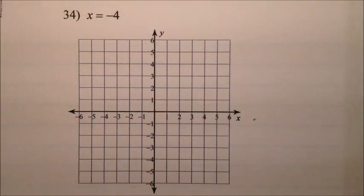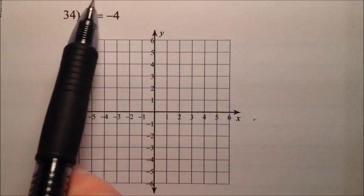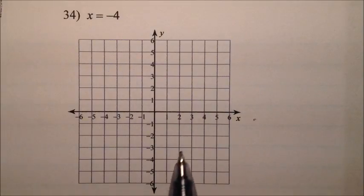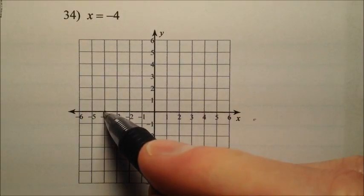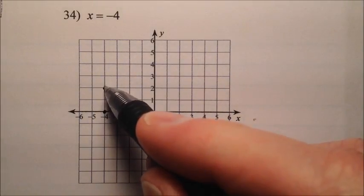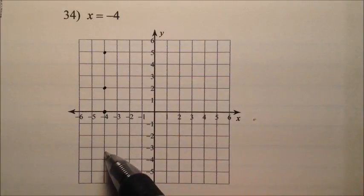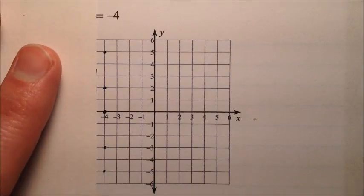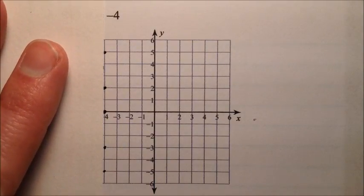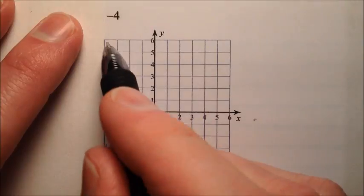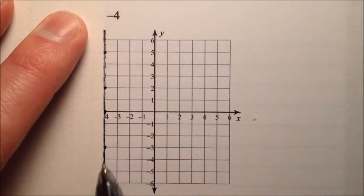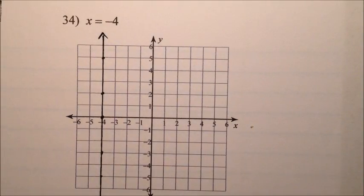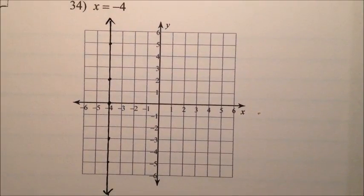On number 34, my equation is x equals negative 4. So I know right away this is going to be a vertical line, and it's going to pass through the x-intercept of negative 4. So I can go negative 4, and then draw some other points that would cause this to be vertical, because it's just straight up and down. So I can bring in my straight edge here, my little note card that I'm using, and I can just go ahead and draw that line. So x equals negative 4 is a vertical line right there.